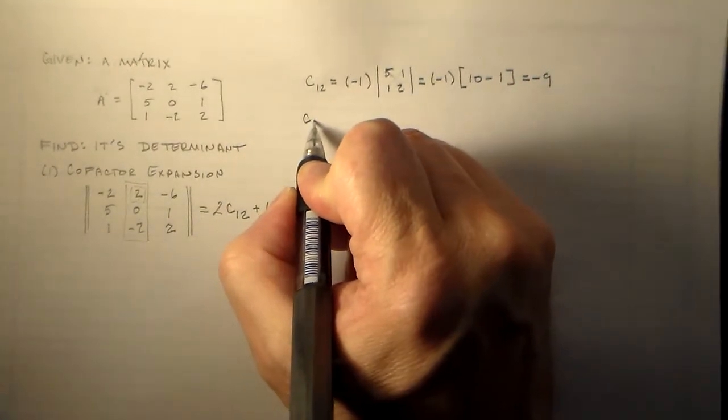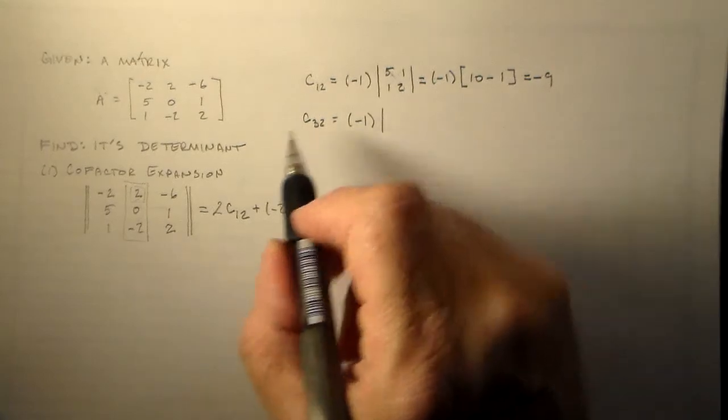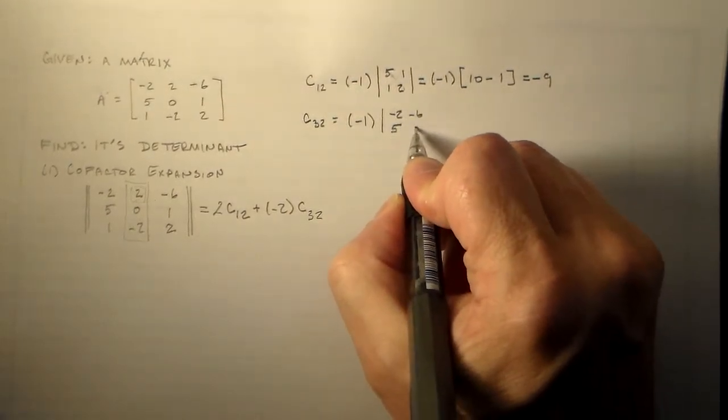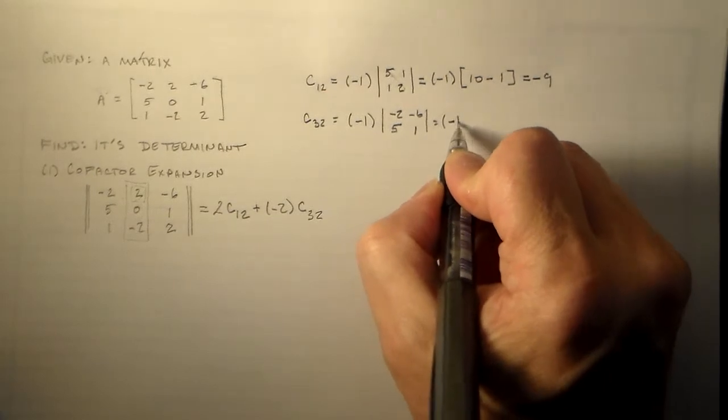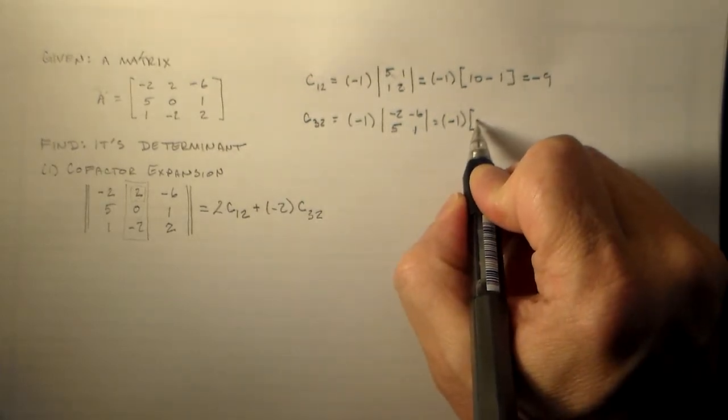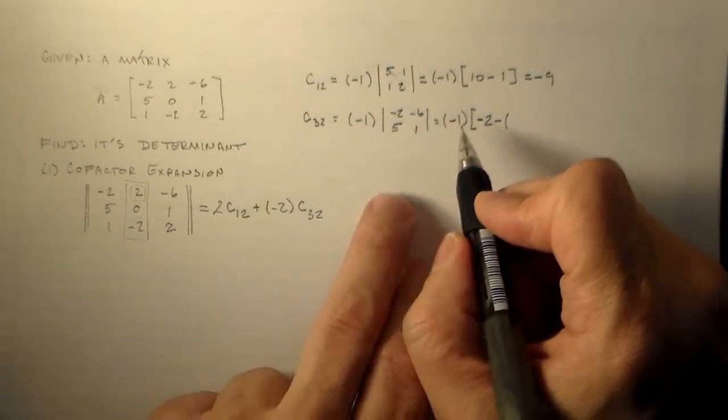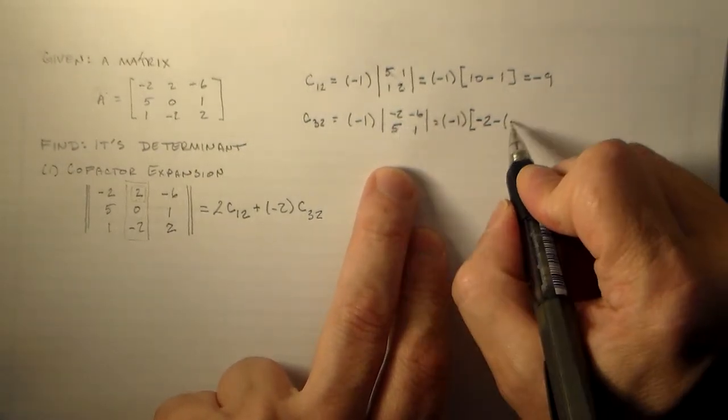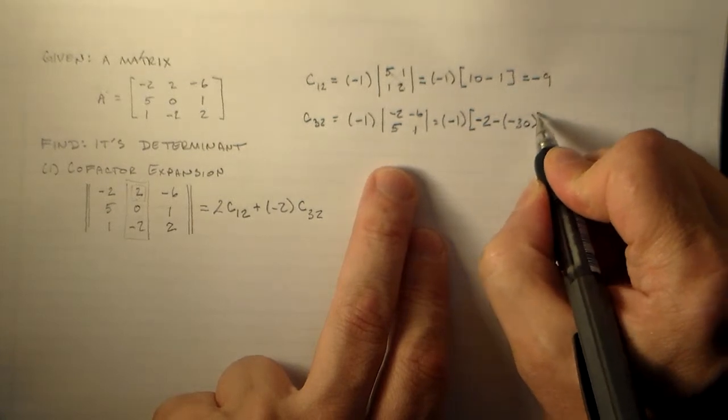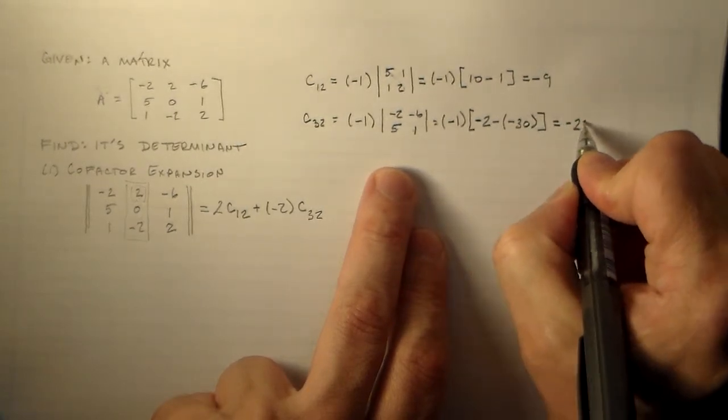Right. And then our c32. Again, one, two, three, four, five. That's minus one. And then we do this other one, minus two, minus six, five, one. Minus two, minus six, five, one. Okay. So that's minus one times minus two times one, which is minus six, five, one. Okay. So that means we have thirty minus two, which is twenty-eight times minus one, which is minus twenty-eight.